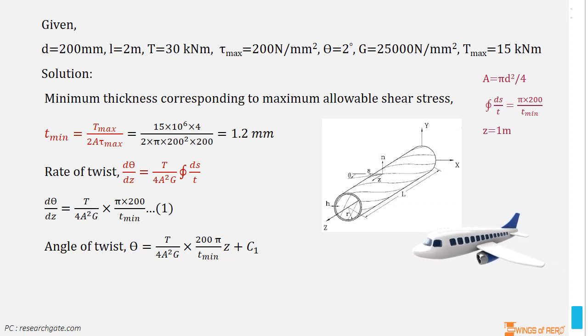At the fixed end where Z is equal to 0, θ is equal to 0, so that C₁ is equal to 0. Hence, θ is equal to T divided by 4A² into G into 200π divided by T_min into Z.